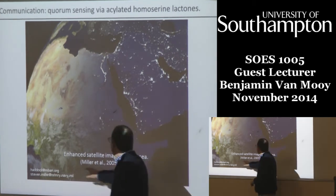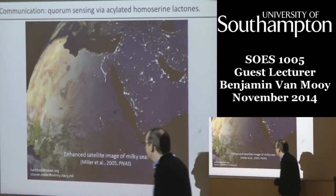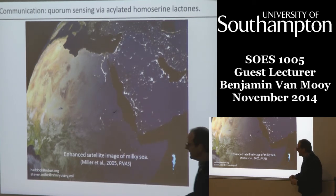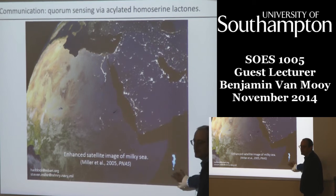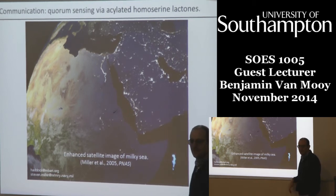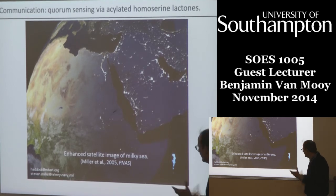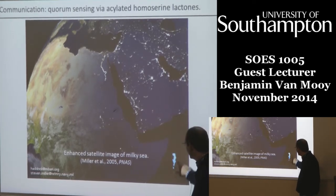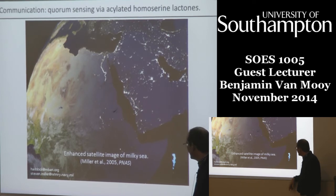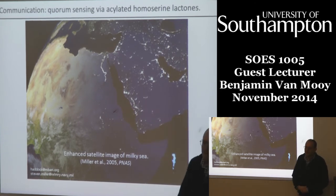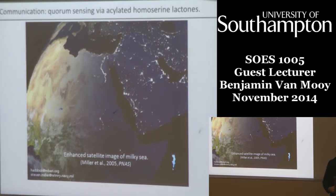A few years ago, a paper came out where a team looked at satellite data and identified circumstances where even in the upper ocean there was evidence of bioluminescence from bacteria, invoking quorum sensing as well. This patch in the satellite image is large — you can see the Horn of Africa and the Arabian Peninsula and the Red Sea. So it can happen at all kinds of scales.